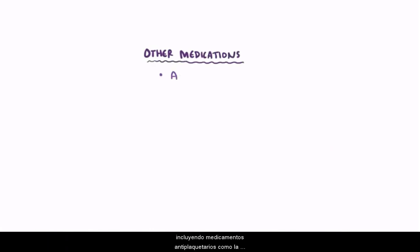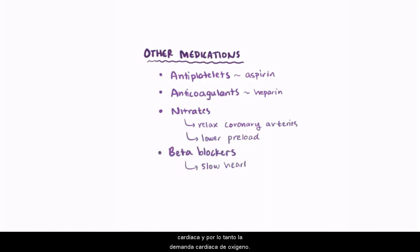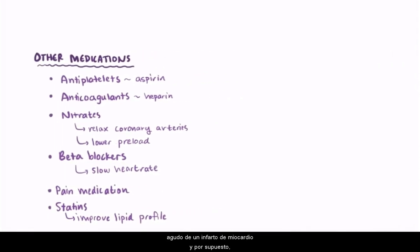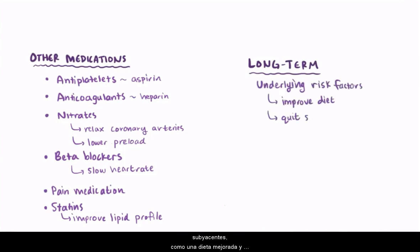In addition to reestablishing blood flow, there are a number of medications that might be given in the acute setting, including antiplatelet medications like aspirin, anticoagulants like heparin, nitrates which relax the coronary arteries and help lower preload, beta blockers that slow down the heart rate and thereby cardiac demand, pain medication to help relieve discomfort, and statins which help improve a patient's lipid profile. There are a ton of individual factors to consider when it comes to acute management of a myocardial infarction, and many long-term issues to consider as well, the most important of which is to address the underlying risk factors like an improved diet and quitting smoking.